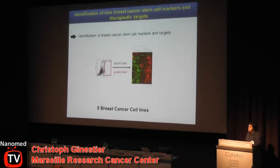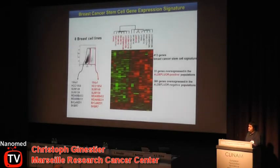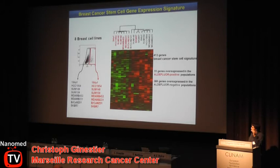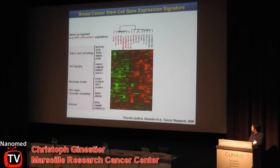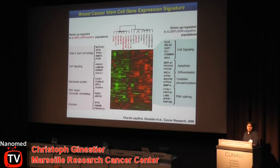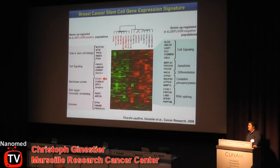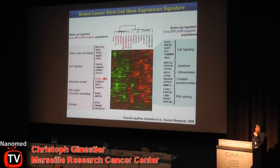We performed one study on eight cell lines, separating the ALDH-positive and ALDH-negative populations and establishing the gene expression signature. We found about 400 genes significantly differentially expressed between cancer stem cells and mature cancer cells. Among the genes upregulated in the ALDH-positive population, we found genes already shown to have a role in stem cell biology. Among those upregulated in the ALDH-negative population were genes involved in differentiation and apoptosis. Because our aim was to find a therapeutic target against cancer stem cells, we focused on CXCR1, which was upregulated in the ALDH-positive population. CXCR1 is an interleukin-8 receptor shown to be involved in proliferation and invasion of cancer cells.